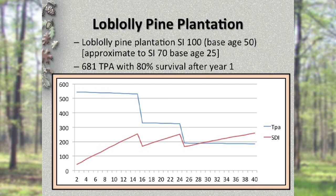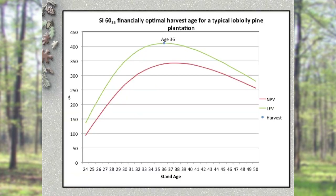When will we conduct the final harvest, and at what age? Your forester will provide you with a discounted cash flow analysis of your pine plantation, including a projected future final harvest age. That future final harvest age is based on financial criteria, and two of the financial formulas often used are NPV, or Net Present Value, and LEV, or Land Expectation Value. Notice that the financially optimal final harvest age increases with stand age, then peaks and declines. Obviously, the financially optimal harvest age is the one where LEV peaks.